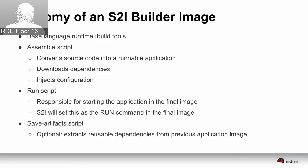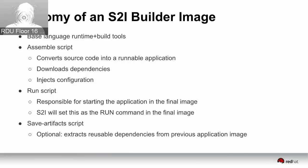Then you have the run script, which is responsible for actually starting the application. When the application image is committed, the startup command for that image will be this script — your JBoss start script, your rack up command, or whatever starts the framework. Any additional runtime configuration you want performed each time the application starts can be made configurable via environment variables. It's a shell script or other executable binary that sets the run command of your app image.